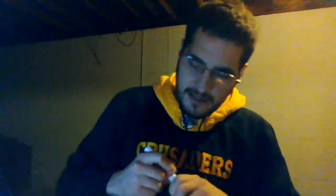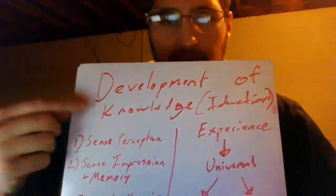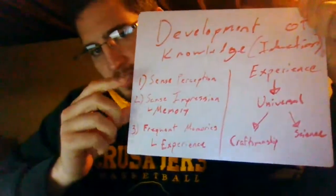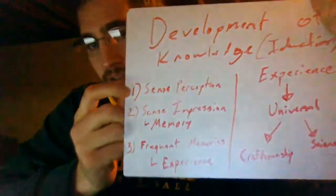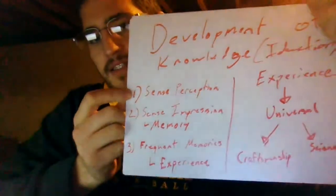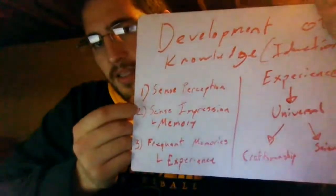The development of human knowledge, also known as the science of induction, proceeds in the following manner. To start things off, first and foremost, man — and all animals — have sense perceptions. The sense perceptions, the information we receive from our senses, is the basis of all our knowledge. When you have multiple sense perceptions, they become sense impressions, and these sense impressions are the basis of memory.